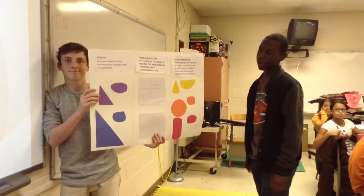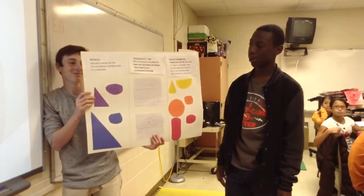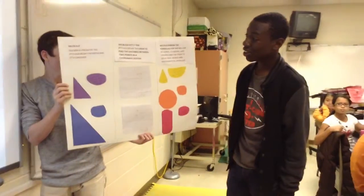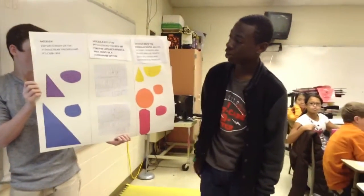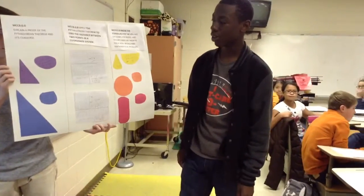This is my project for unit 3 and 4 for 8th grade math. The first standard is explaining proof of the Pythagorean theorem and its converse.